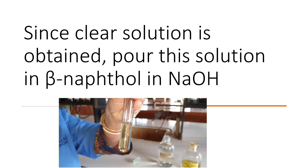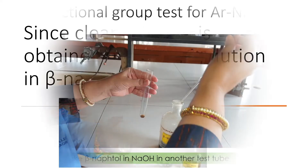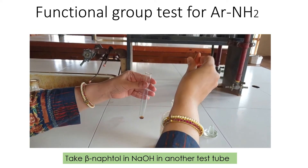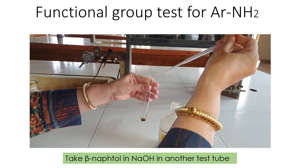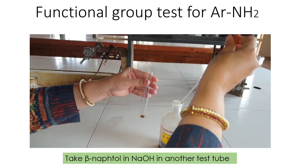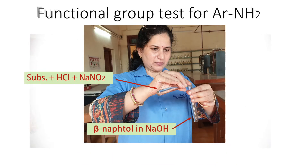To check for the presence of a primary amine we will pour this solution into beta-naphthol in NaOH. Take beta-naphthol in NaOH in another test tube. Now pour the clear solution obtained earlier — that is, substance plus HCl plus NaNO₂ — into the beta-naphthol in NaOH and observe the color.